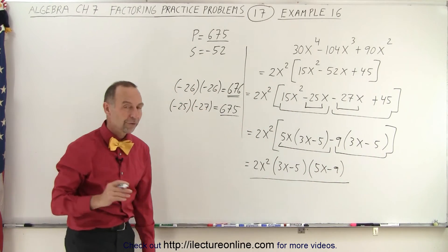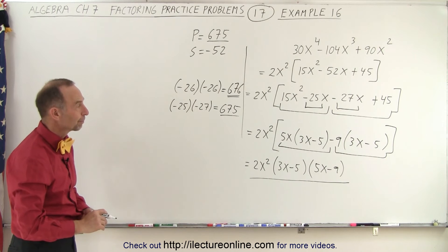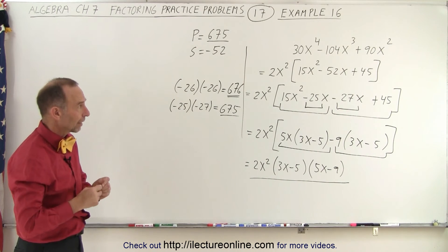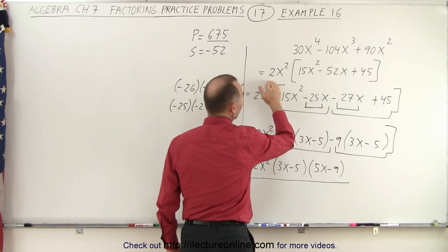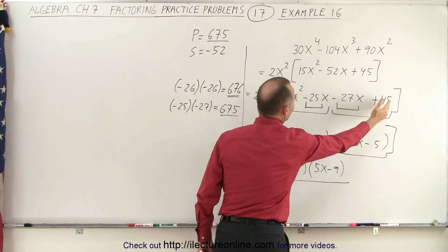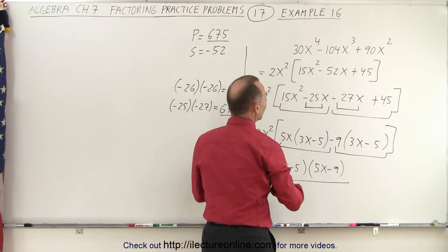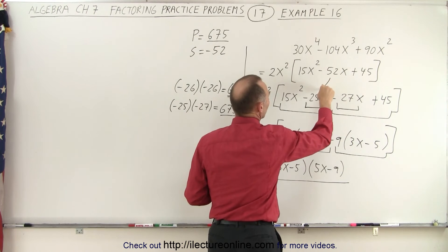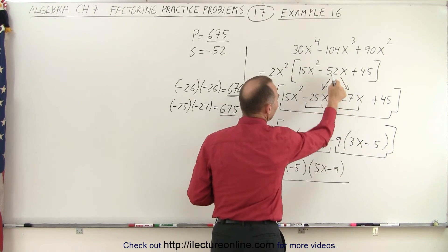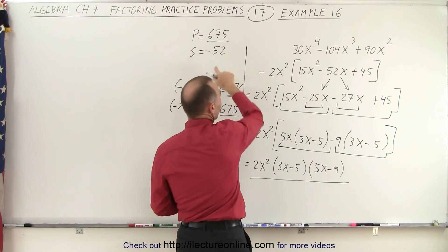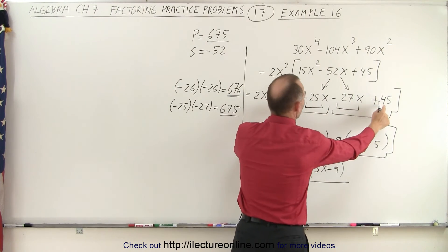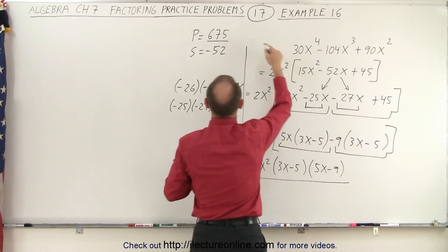And there's the factored form of our original problem. It was challenging, but doing it very systematically will actually work. So first, we factor out a common factor. Then we realize that we can write this as a sum of four terms. Notice that the middle term is now split up into two middle terms. We know that the two middle terms here added up together gives me back to minus 52. So the sum must be minus 52. And the product of the two numbers must equal the product of these two numbers, which end up being 675.